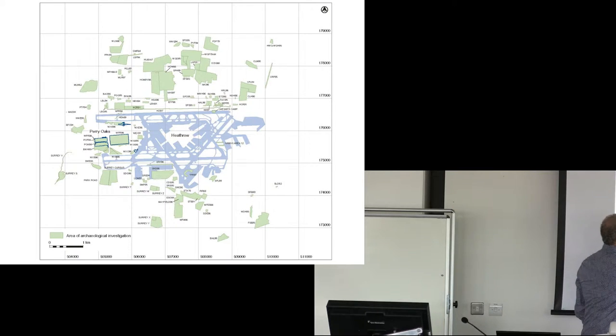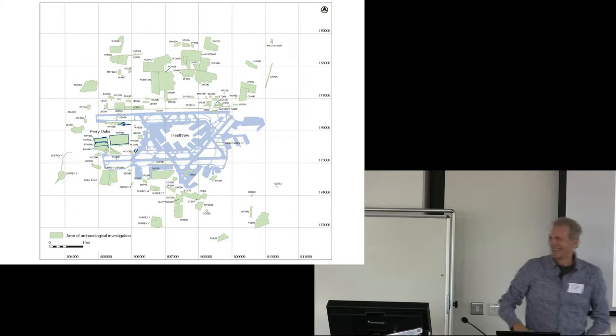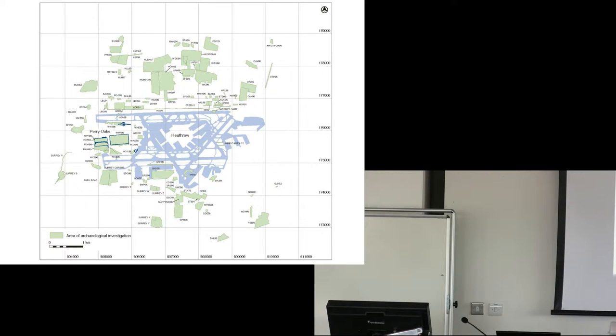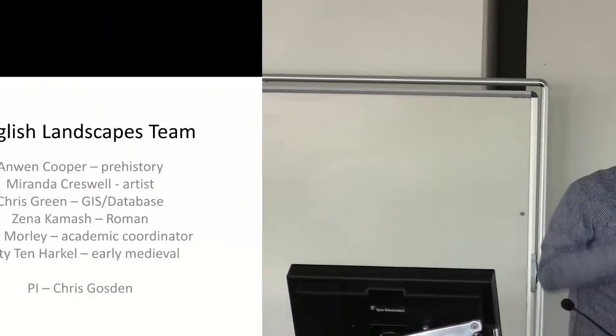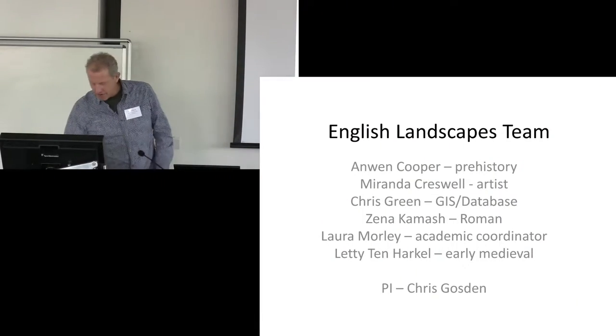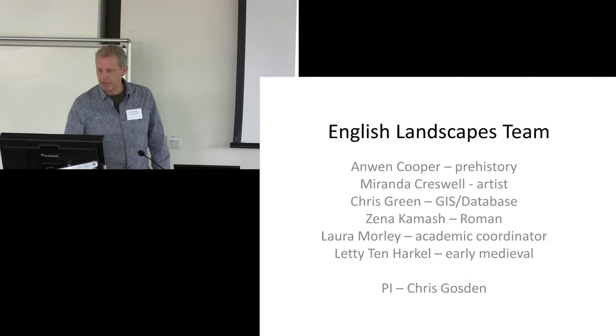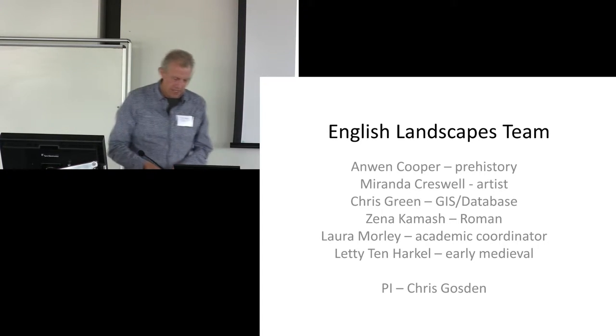So this is Perry Oaks here, this is Heathrow, and you probably can't see it. The things I'm going to point to are pretty visible anyway. There are lots of other archaeological interventions around Heathrow. So there are a number of areas of the landscape now that we know in considerable detail.